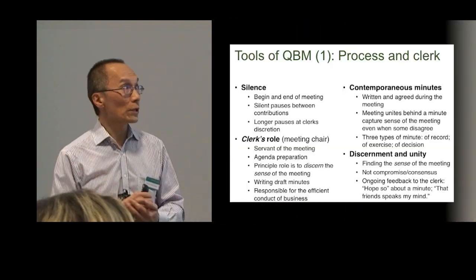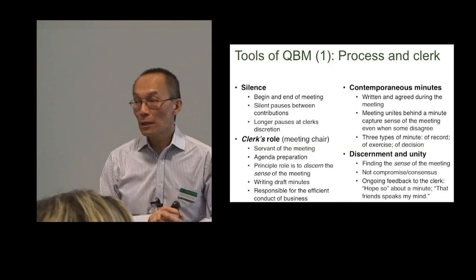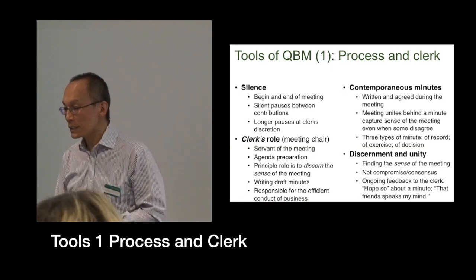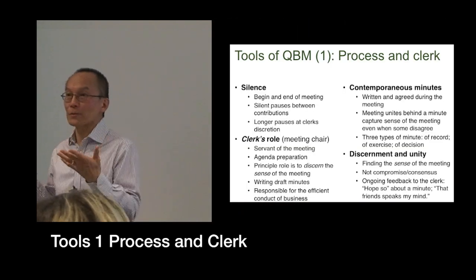My approach to thinking about the business method is to actually do what scientists do, which is to decompose things and then look at their component parts. I've identified 29 different specific components and then organised them into nine different aspects.